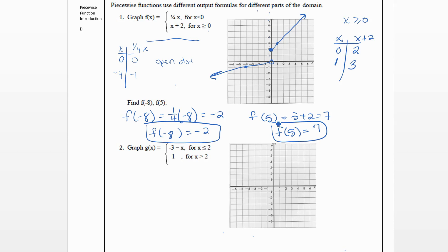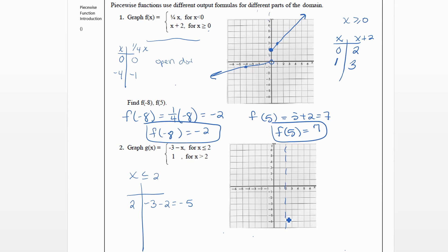Now we're going to graph one more. This one says g of x equals negative three minus x for x less than or equal to two, and it equals one for x greater than two. I like to make a dotted line where the function changes — we're changing at x equals two. For the first piece, let's plug in two: negative three minus two gives negative five. Since it's less than or equal to two, we put a closed dot at two, negative five. Plugging in zero: negative three minus zero is negative three, giving us the point zero, negative three, and that draws our line.